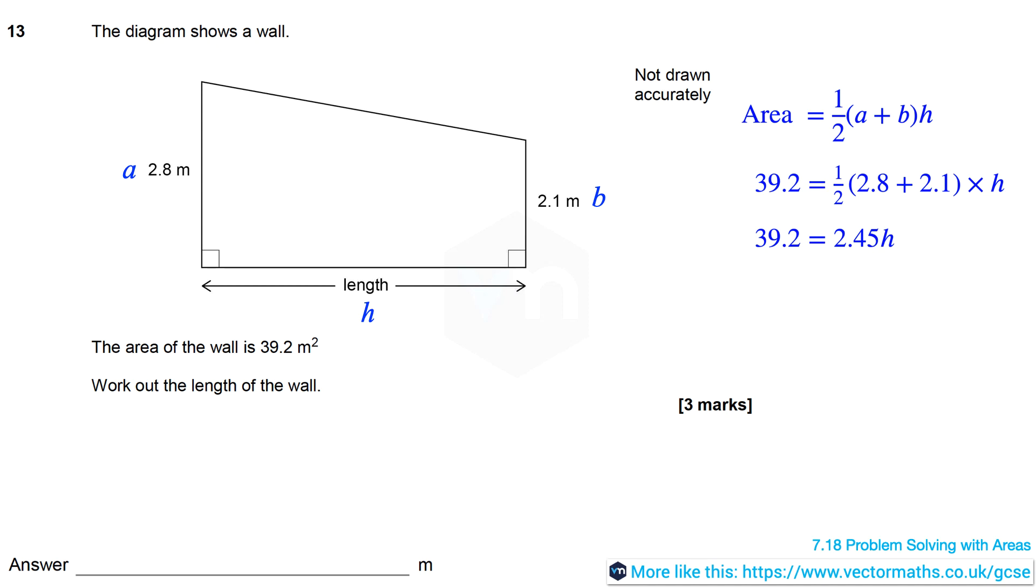So here 39.2 equals a half into 2.8 plus 2.1 times h. Therefore 39.2 equals 2.45h, and so h equals 39.2 divided by 2.45, which equals 16.